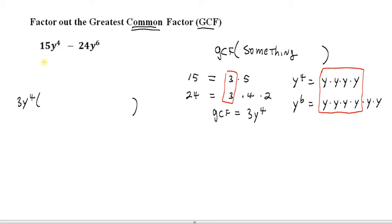So if I take that GCF and divide that into each one of these terms, so take the GCF and divide it into the 15y to the 4th, also divide it into 24y to the 6th, that's going to tell us what goes inside the parentheses.